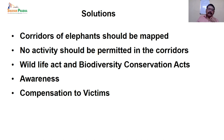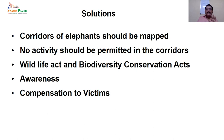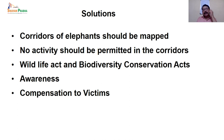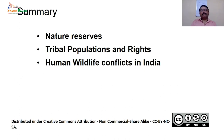The solution for human-wildlife conflict requires marking the movement of animals — the corridor. No activity should be permitted in corridors; the Wildlife Act and Biodiversity Conservation Act should be largely implemented. Awareness also has to be maintained and whenever victims suffer injury, adequate compensation should be provided to the people.